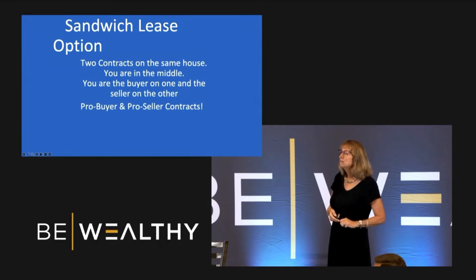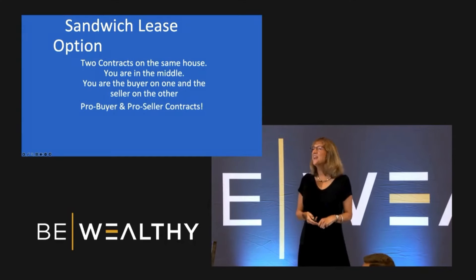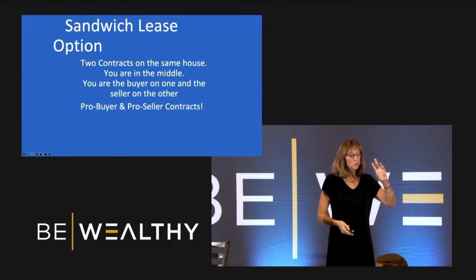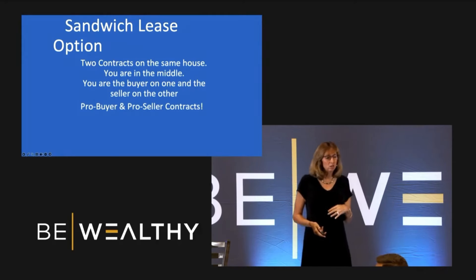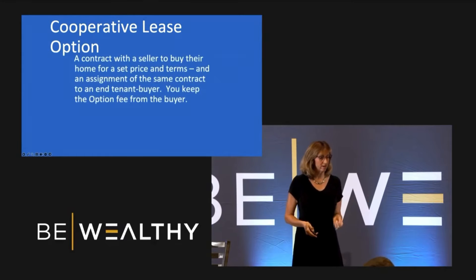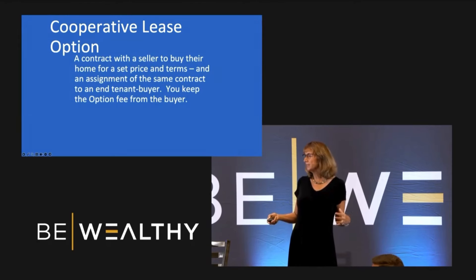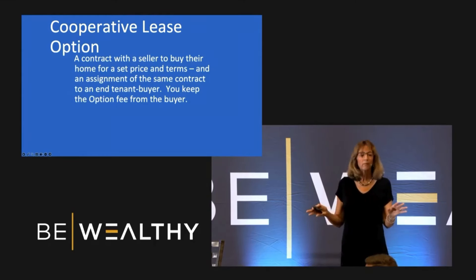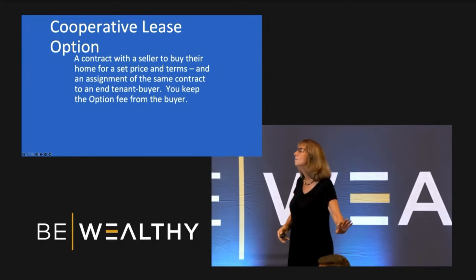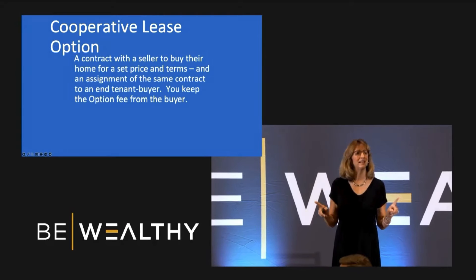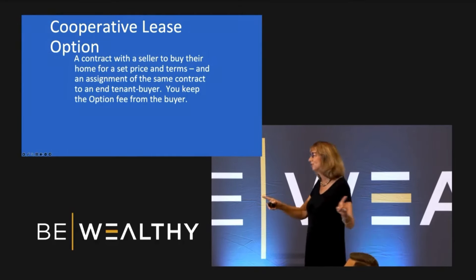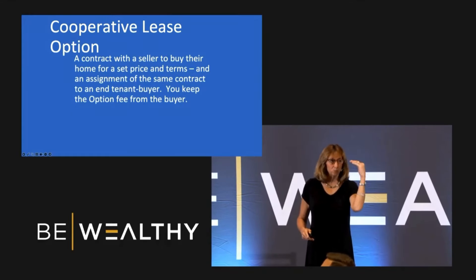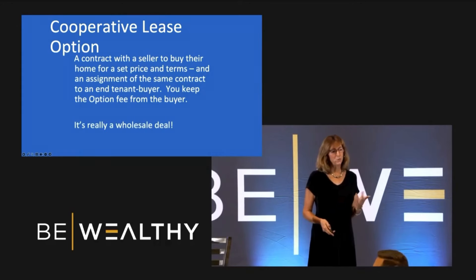I'm going to actually go through numbers on both deals, because sometimes that helps with a real deal. On a sandwich lease option, there are two contracts in the same house — you're in the middle, buyer on one side, seller on the other. Cooperative is when you find a seller, you're in the middle, and you assign the contract — it's a wholesale deal, you keep the option fee from the buyer. There's way more complexity we could cover, but I'm giving you the high level in the time we have.